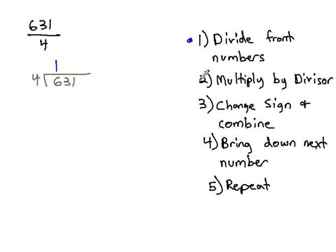Once we've done that, we will multiply this 1 by the divisor. 1 times 4 is 4. Then we would change the sign on the 4, we would subtract, and combine 6 minus 4 to get 2.